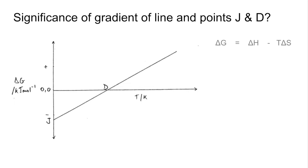The first thing we'll do is get the Gibbs equation on the screen and we'll identify the y and x values. So delta G is the y value and T is the x value.